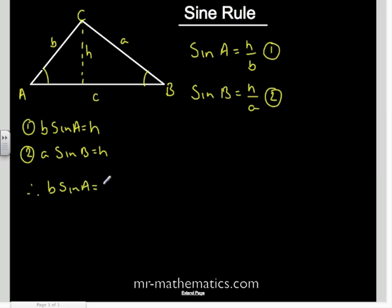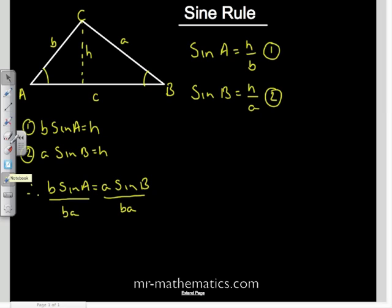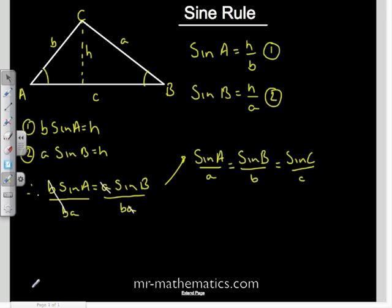And we'll divide both sides by ba. The b's will cancel on the left-hand side and the a's on the right-hand side, so we're left with sine of angle A over the length a equals sine of B over the length b, which is also true for sine of C over c. And that is the sine rule.